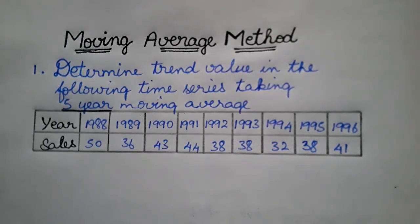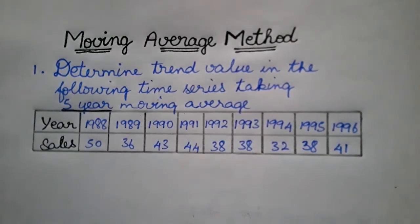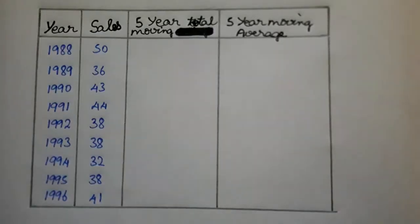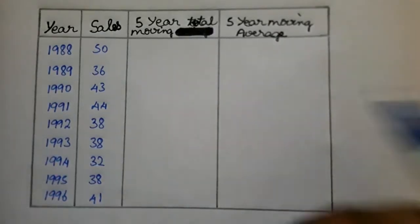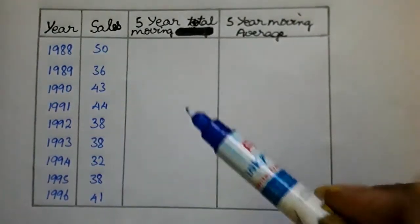In this question, we will check the year and sales. We will check the 5-year moving average and the 5-year moving total columns in the table.